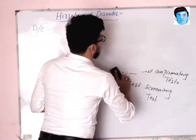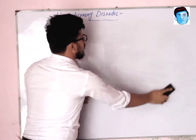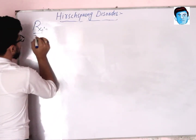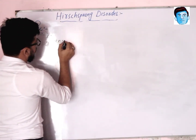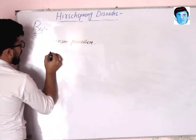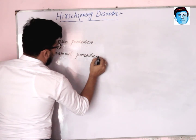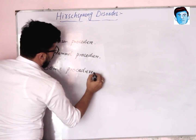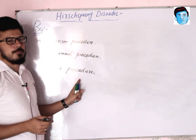The choice of treatment for Hirschsprung disease is surgery. There are three surgical options available: the first is called the Swenson procedure, the second is the Duhamel procedure, and the third is the Soave procedure.